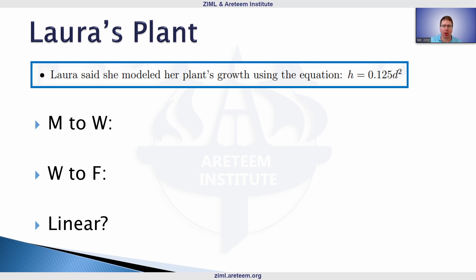Let's explore what's needed to answer these questions, plant by plant. Laura modeled her plant's growth using the equation h = 0.125d². The first thing students might want to do is recognize that if we're given an equation, it's useful to calculate values for a few specific days and make a table of day versus height.